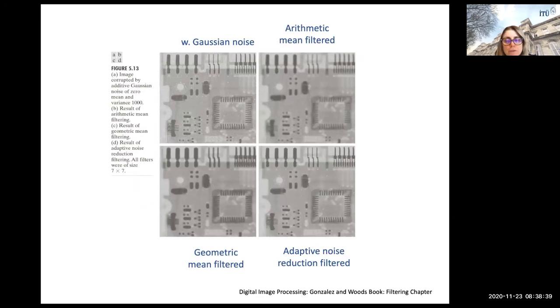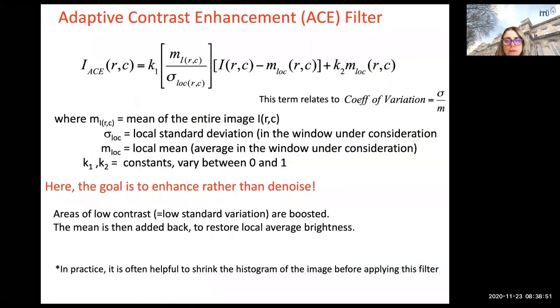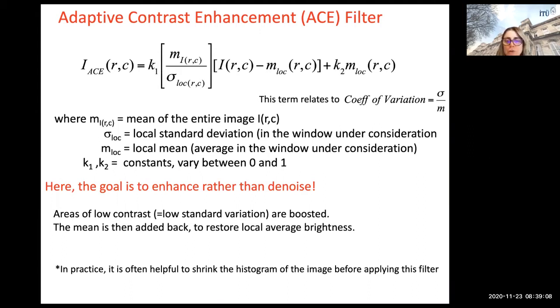Let's finish and wrap up the spatial filtering topic and start with edge detection. This compares order statistics filters, averaging or smoothing filters like Gaussian, or adaptive noise filters. This other one tries to enhance contrast — actual contrast enhancement filtering. Depending on the purpose, filtering may be trying to reduce noise, or the goal may be to enhance rather than denoise, as in this example.